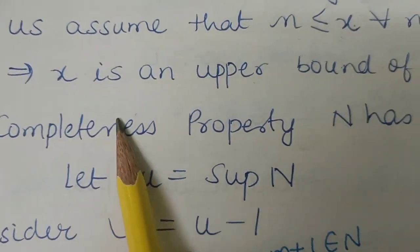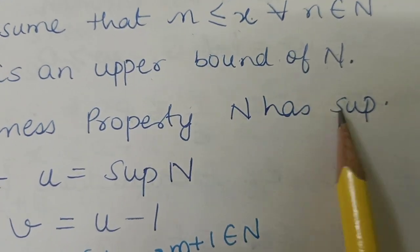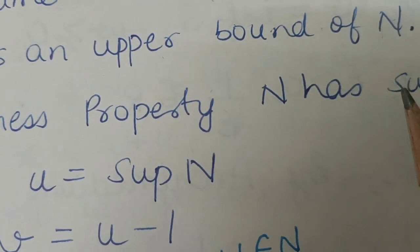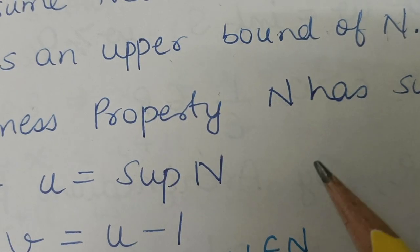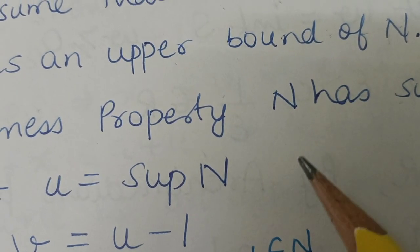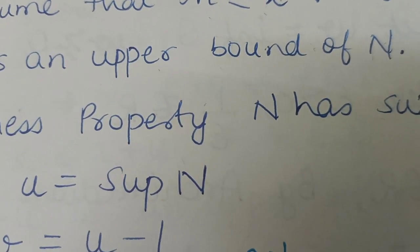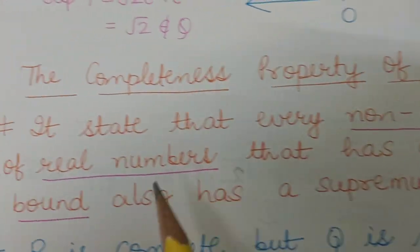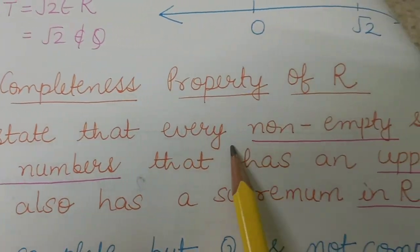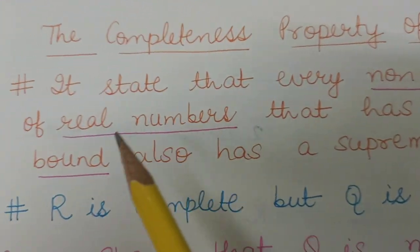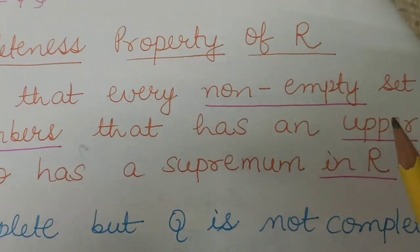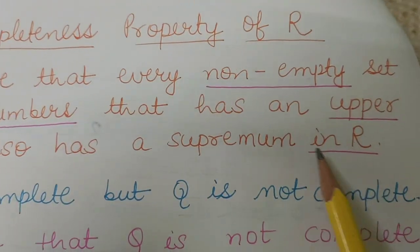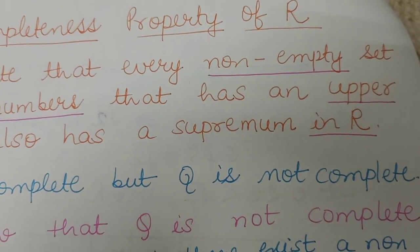So by the completeness property, since the natural number set has an upper bound, it must also have a supremum. The completeness property of real numbers states that every non-empty set of real numbers that has an upper bound also has a supremum in the real numbers.